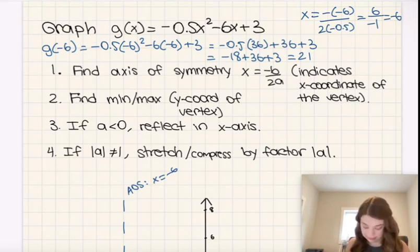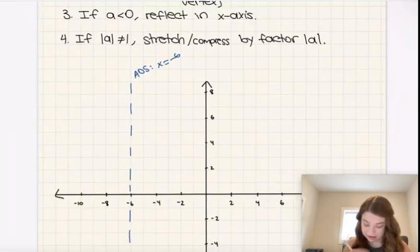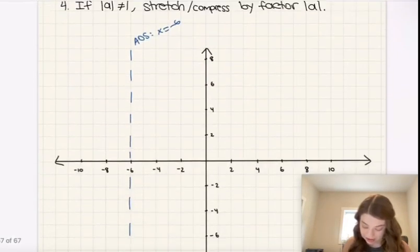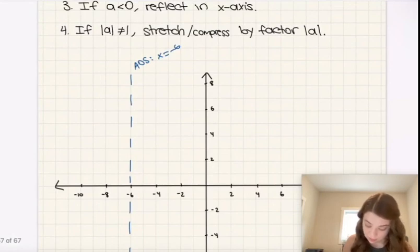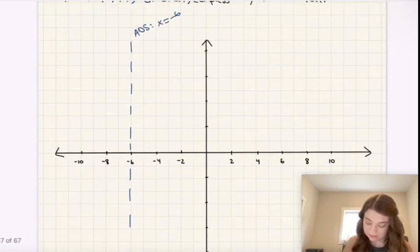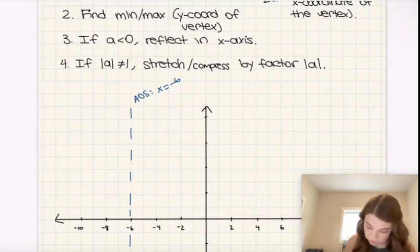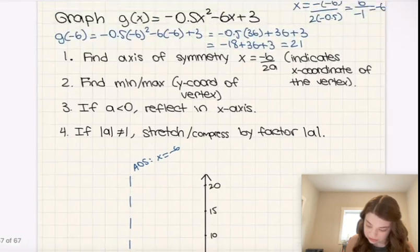It's 21, which is actually quite a bit higher than this graph is going. So what I'm going to do for that, I'm actually going to change the scale of the y-axis for this one, because we need to be able to indicate where the vertex is, that's not optional. So let's do every two squares can represent 5, 10, 15, 20, and then now we can do that.